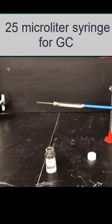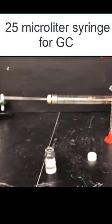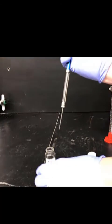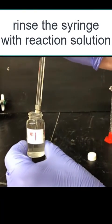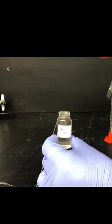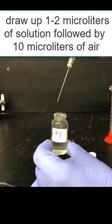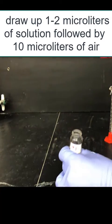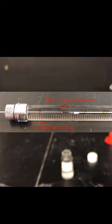To inject solution into the GC, get a 25 microliter syringe and rinse it with acetone to clean it. Next, we're going to rinse the syringe with the reaction solution that we're going to analyze. This fully cleans out the syringe and gets it ready for injection of our material. Next, draw 1 to 2 microliters of the solution that we want to analyze, followed by 10 microliters of air. The air will help us push the solution into the GC's injector port. Here's what it looks like close up.